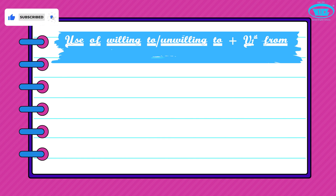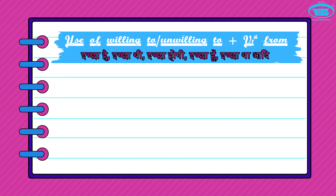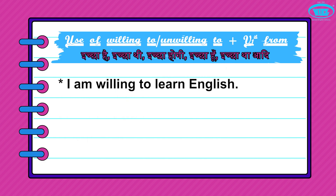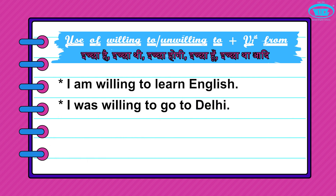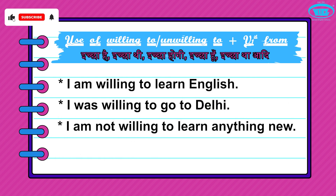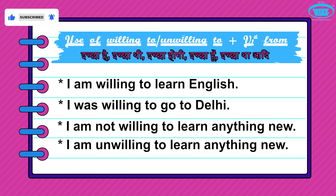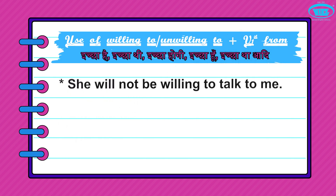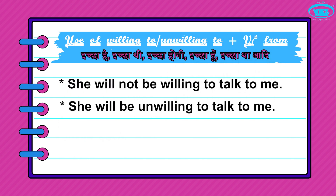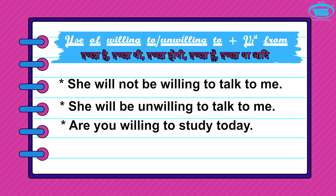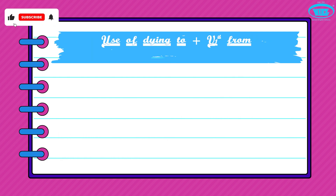The pattern is: willing to / unwilling to + first form of verb. For example: I'm willing to learn English. I was willing to go to Delhi. I'm not willing to learn anything new, or I'm unwilling to learn anything new. She will not be willing to talk to me, or she will be unwilling to talk. Are you willing to study today?